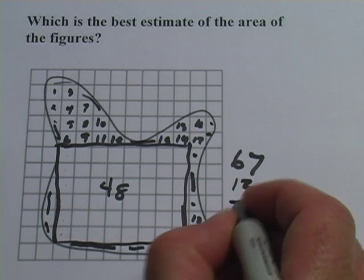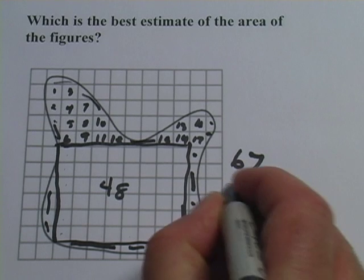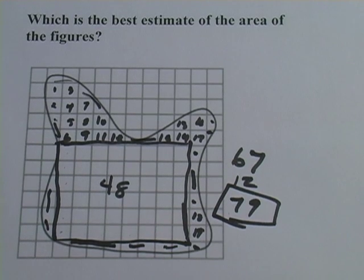So 67 plus 12 would be 79. Now, this is not an exact number, but it's a pretty good estimate. And usually in a problem like this, you might have multiple choice. So it might say, what's the best number for the area? Is it 60 square units or 80 square units or 100 square units? If that was the case, we'd choose 80.